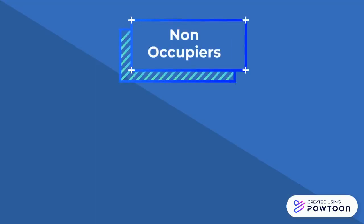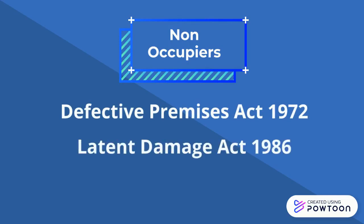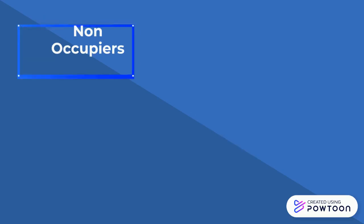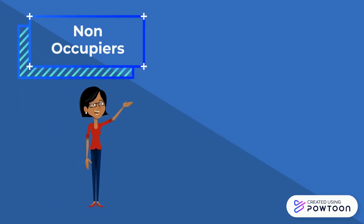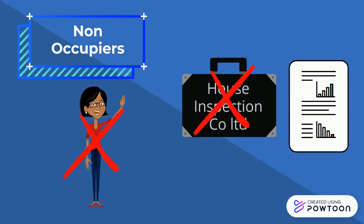Certain problems arise in the law when a non-occupier is being pursued. The two acts surrounding this are the Defective Premises Act 1972 and the Latent Damage Act 1986. This generally applies where a person has sold a house to another and the house turns out to be faulty. As the seller is no longer the occupier, they generally cannot be held liable. The same goes for various inspection agencies who may be inaccurate in their reports, causing people to buy faulty houses.